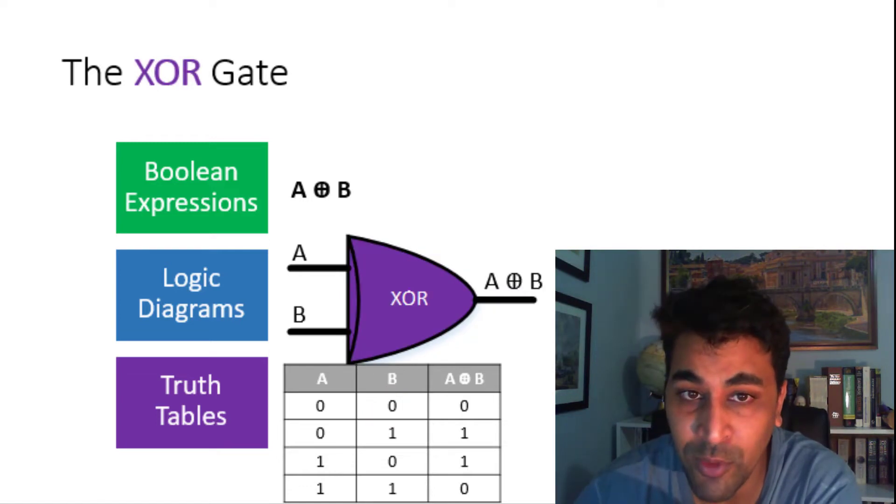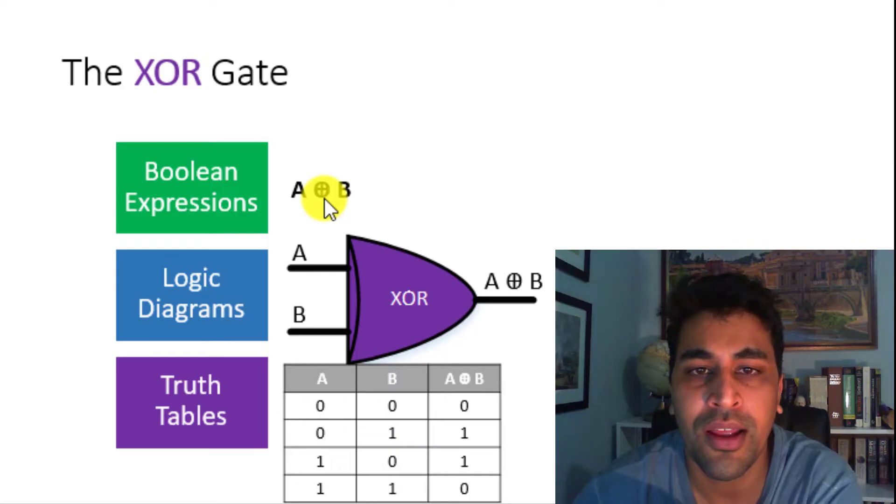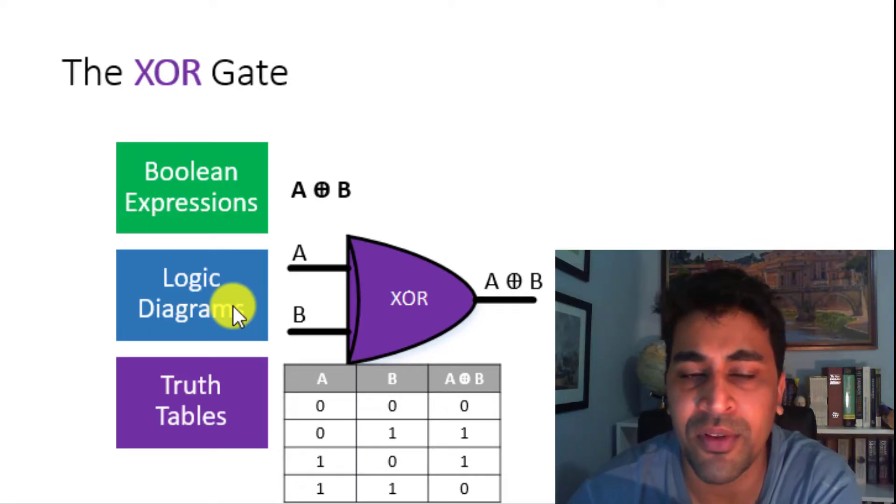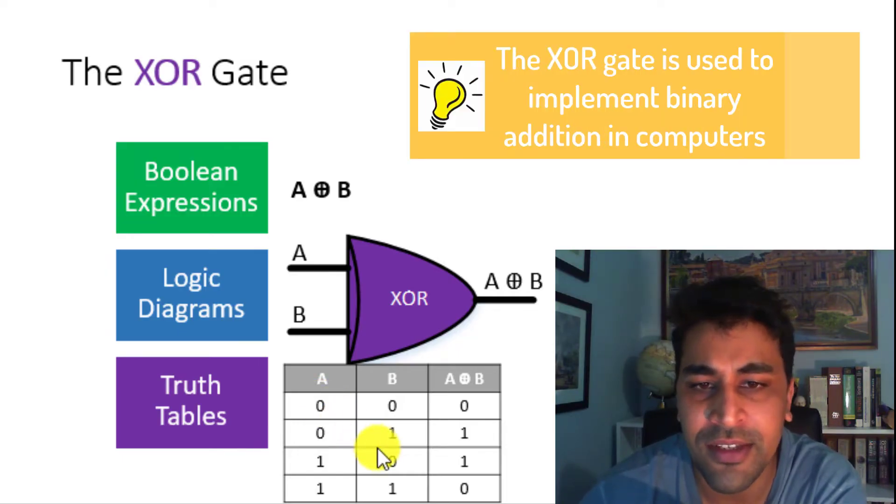Finally, we come to the exclusive OR gate. The Boolean expression for an exclusive OR gate looks like the expression for an OR gate, except there's a circle around the OR. The logic diagram for the exclusive OR gate looks like this. And finally, the truth table for the exclusive OR gate demonstrates that if the inputs are the same, we would get a 0. And if the inputs are different, we would get a 1.